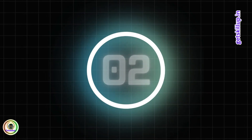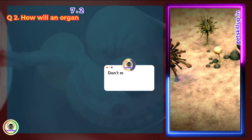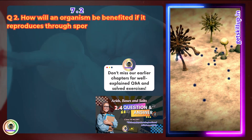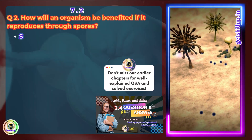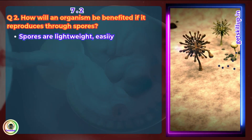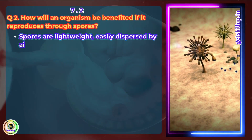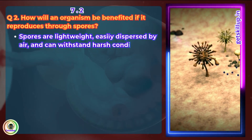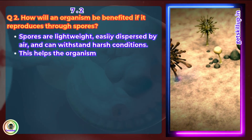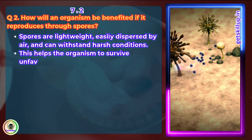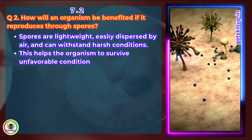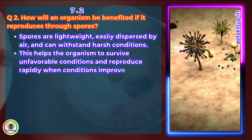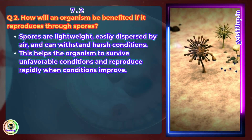Question 2: How will an organism be benefited if it reproduces through spores? Spores are lightweight, easily dispersed by air, and can withstand harsh conditions. This helps the organism to survive unfavorable conditions and reproduce rapidly when conditions improve.